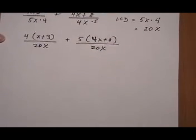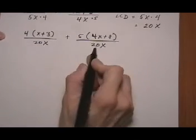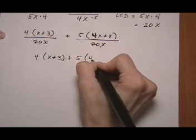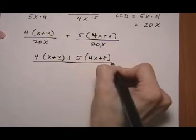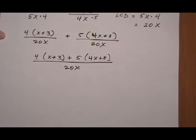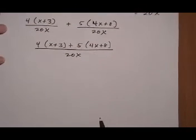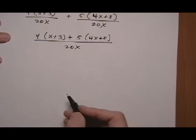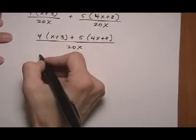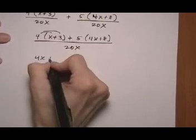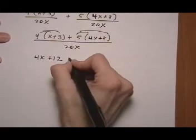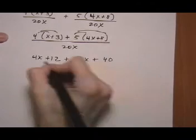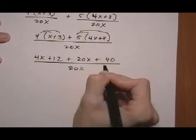And now we can go ahead and add across the top and keep the denominator. So we get 4 times x plus 3 plus 5, 4x plus 8, all over the common denominator. And now we want to put it in lowest terms. So we need to simplify it first, clear parentheses, combine like terms, then factor, and then we can cancel. So first clearing parentheses, 4x plus 12 plus 20x plus 40, all over 20x.